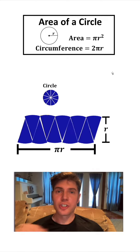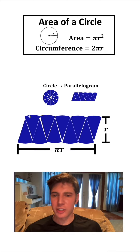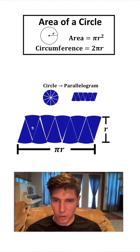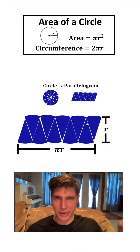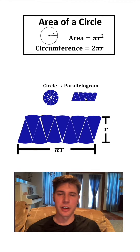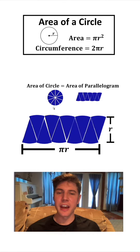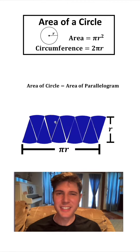It started as a circle and we've changed it into a parallelogram. This might look like it has some bumps, so it's not a perfect parallelogram. But the more slices we cut it into, the straighter those bumps are going to become. If we cut it into an infinite number of slices, those will become a straight line, and that's what gives us the parallelogram. Since this parallelogram is made up of all the pieces of the circle, the area of the circle equals the area of this parallelogram. The area of a parallelogram is base times height.